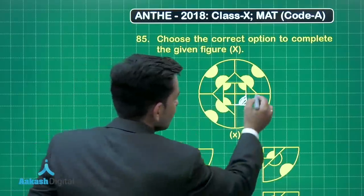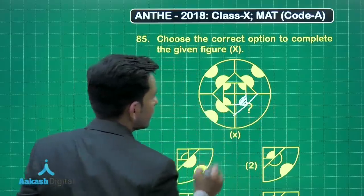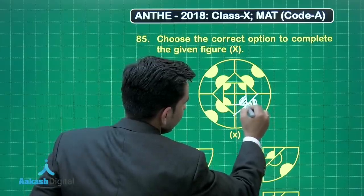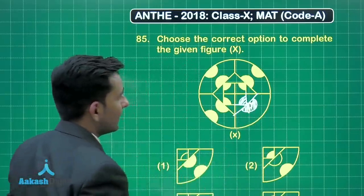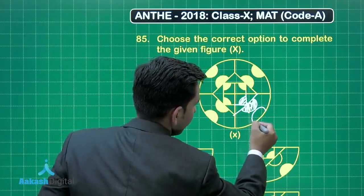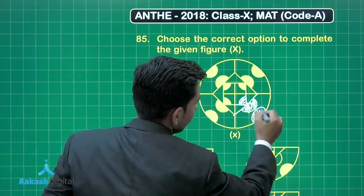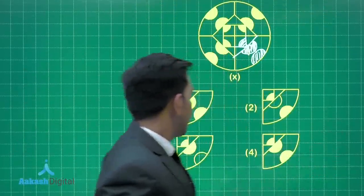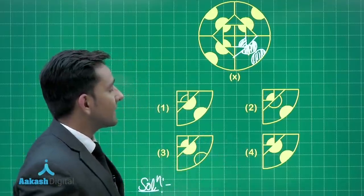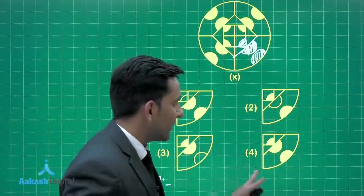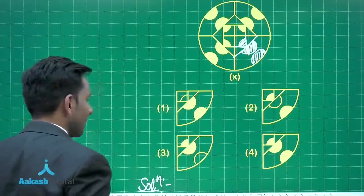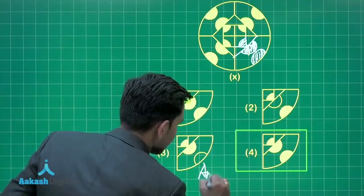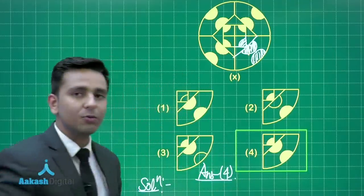Then you can join this line and shade outside this. You can see that the fourth option is the correct answer for this question because we are getting the same structure. So option number 4 is correct. The answer for this question is option number 4. I hope you understood this question. Now let's move forward to the next question.